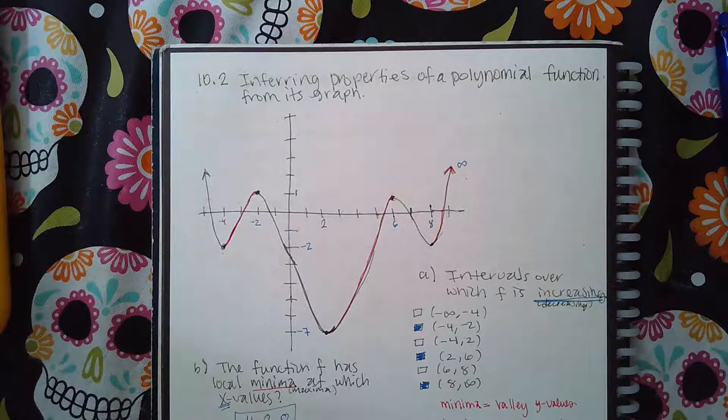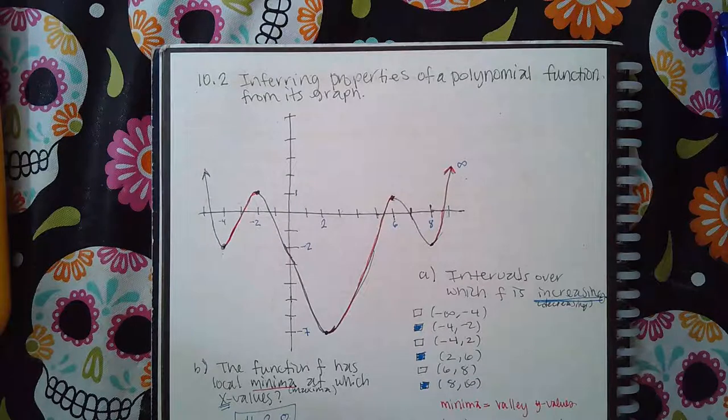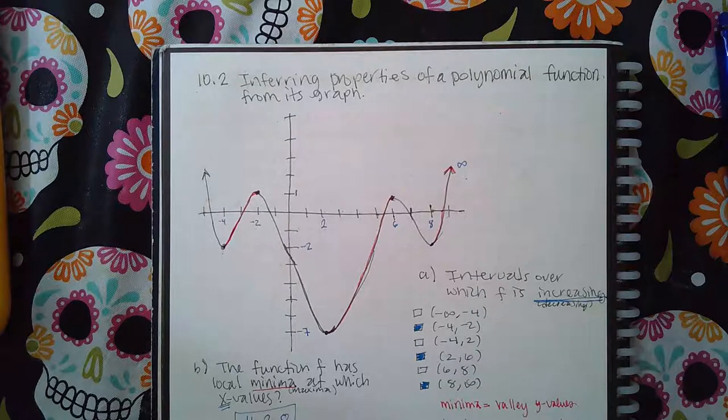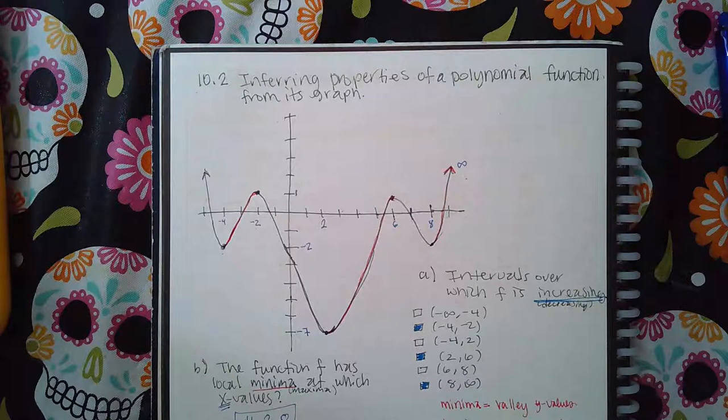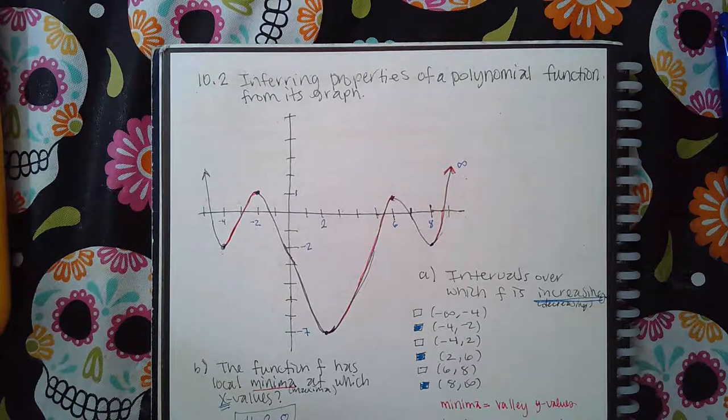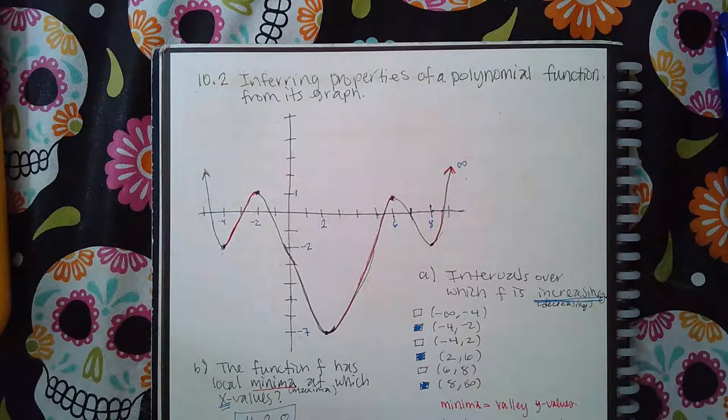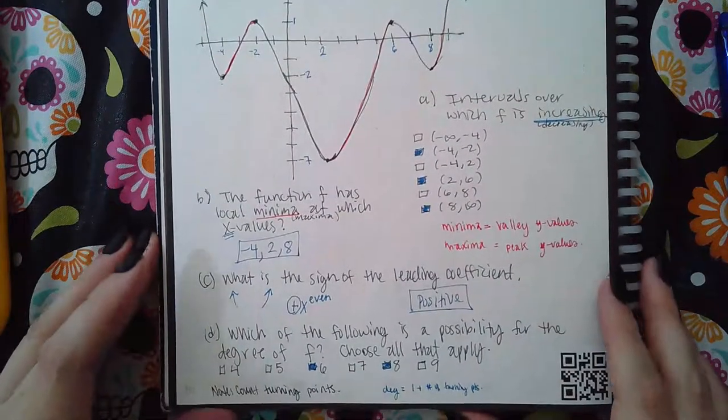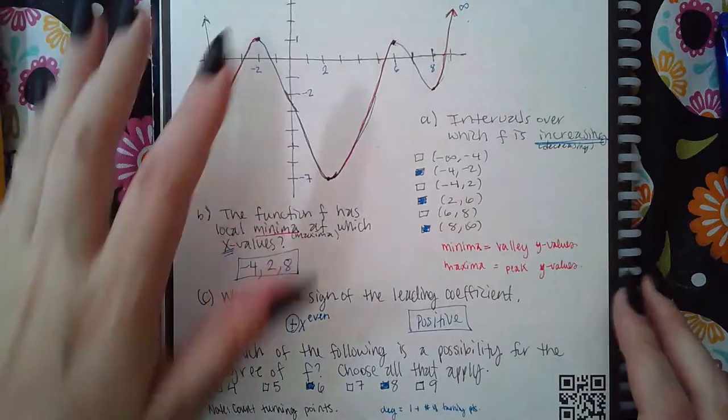Okay, this is 10.2: infer properties of a polynomial function from its graph. I did previously record it, which is why it's already all written on here, but I wanted to go over it because the program shut down, so I have to re-record. This problem has four parts, all based off of this graph here.